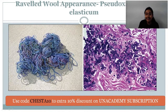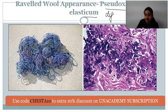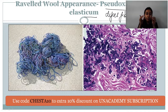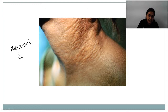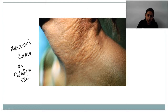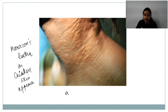The raveled wool appearance is seen in pseudoxanthoma elasticum. The classical clinical feature is called Moroccan leather appearance, also called chicken skin appearance, very characteristic of pseudoxanthoma elastica. In the eye, you see angioid streaks — a very important ocular finding.